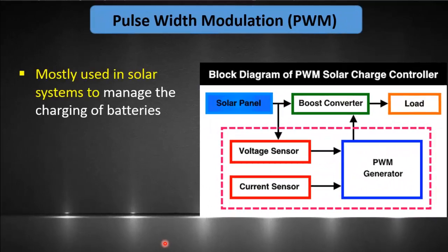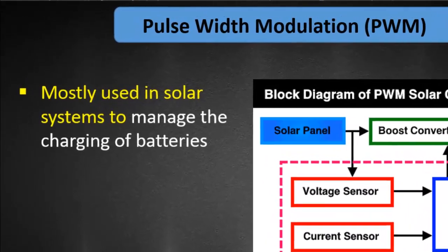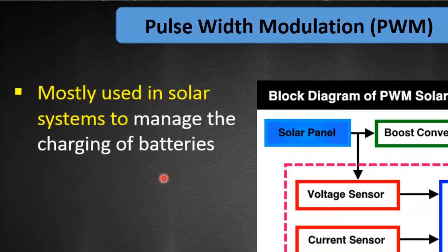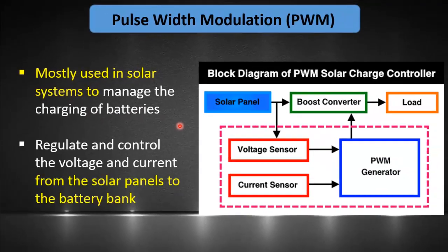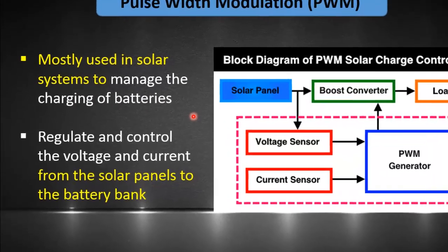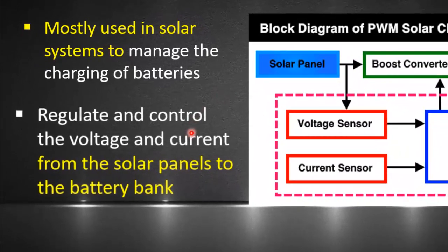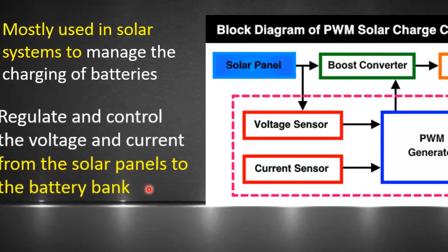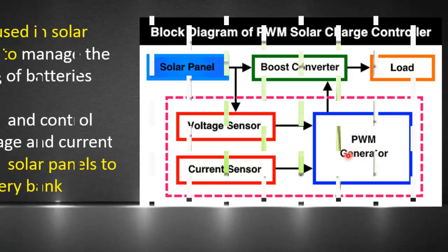A PWM — pulse width modulation — solar charge controller is a device used in solar power systems to regulate and manage the charging of batteries from solar panels. A PWM solar charge controller regulates the amount of energy delivered to the batteries by modulating the width of electrical pulses from solar panels to prevent overcharging.